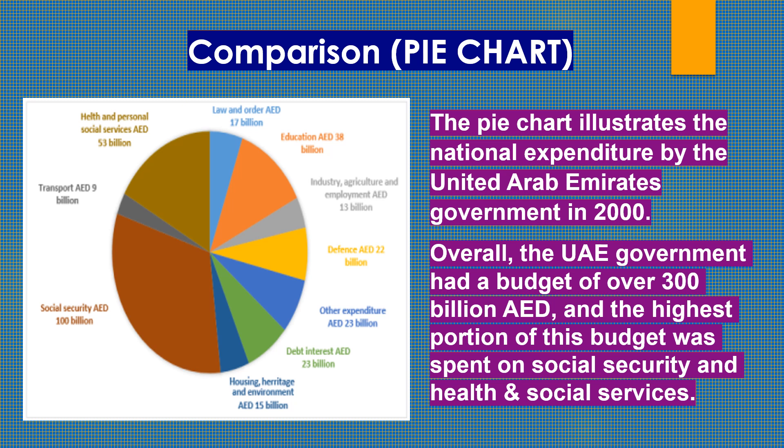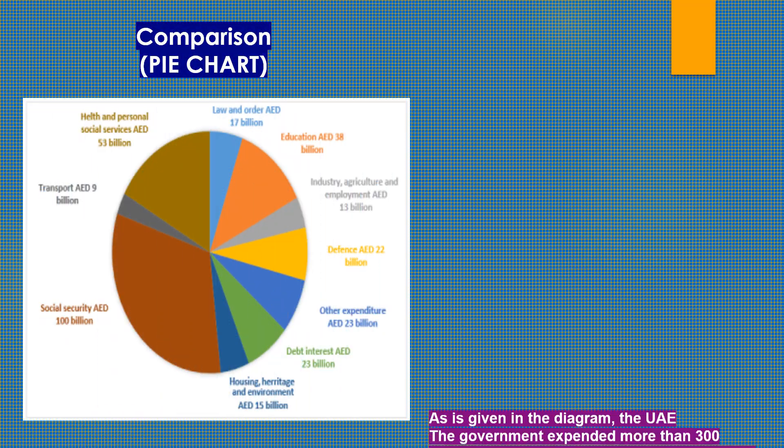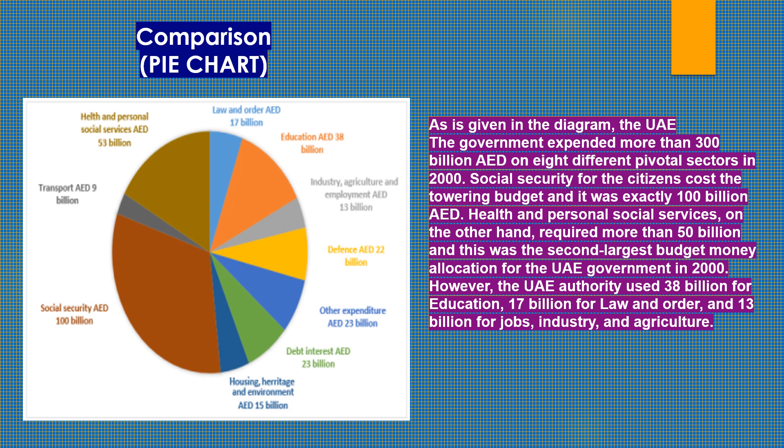The pie chart illustrates the national expenditure by the United Arab Emirates government in 2000. Overall, the UAE government had a budget of over 300 billion AED and the highest portion of this budget was spent on social security and health and social services. As is given in the diagram, the UAE government expended more than 300 billion AED on eight different pivotal sectors in 2000. Social security for the citizens cost the towering budget and it was exactly 100 billion AED. Health and personal social services on the other hand required more than 50 billion, which was the second largest budget allocation for the UAE government in 2000. However, the UAE authority used 38 billion for education, 17 billion for law and order, and 13 billion for jobs, industry and agriculture.